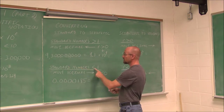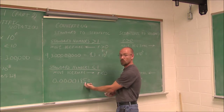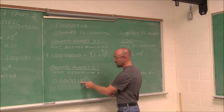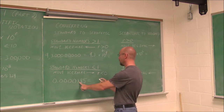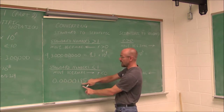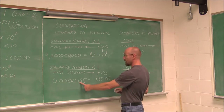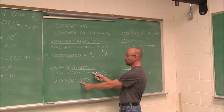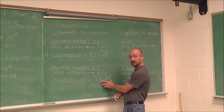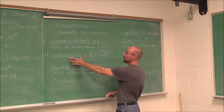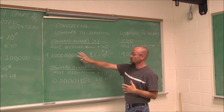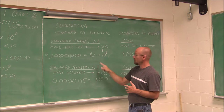What about small numbers? If our standard number is less than 1, we move the decimal to the right to get it to the first non-zero digit, giving us 1.85. Moving it 5 spots to the right — that's 5 factors of 10 — but since it moved to the right it's a negative value, r less than 0. So small numbers have negative exponents, and large numbers have positive exponents when written in scientific notation.